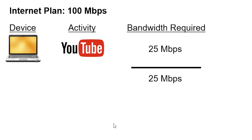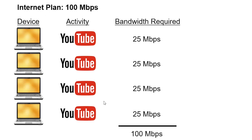Now let's look at what happens when we add more devices to our home network. If we have four laptops all streaming YouTube at the same time, we need four times as much bandwidth — at least 100 megabits per second of available bandwidth from our internet plan. As you can see here, we have exactly 100 megabits per second with our internet plan. With a minimum of 25 megabits per second needed for each YouTube streaming session, if any other devices are added to this home network, you could very easily go over the available 100 megabits per second.